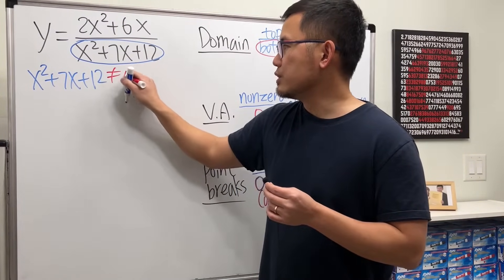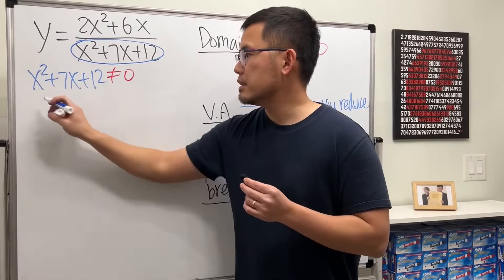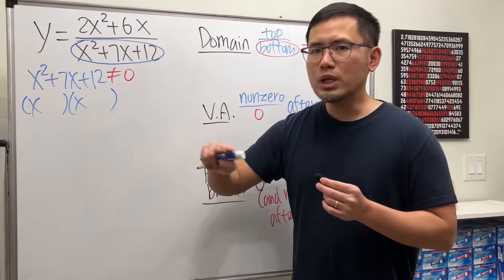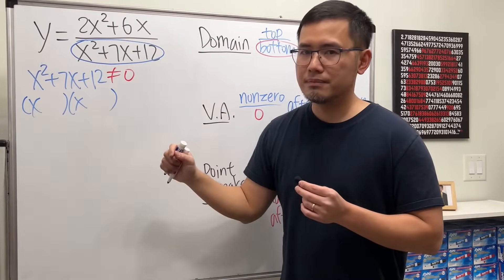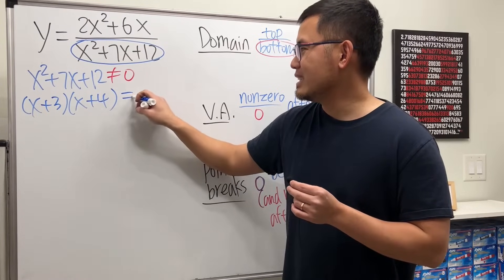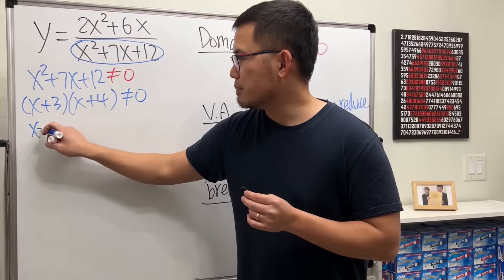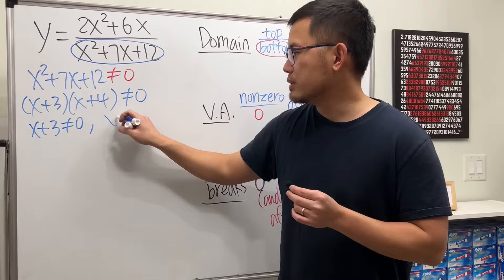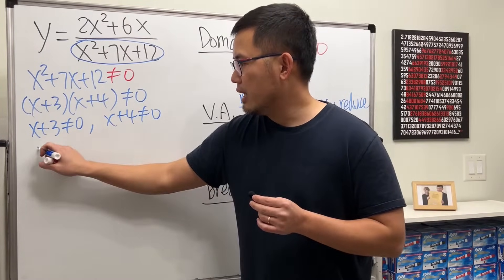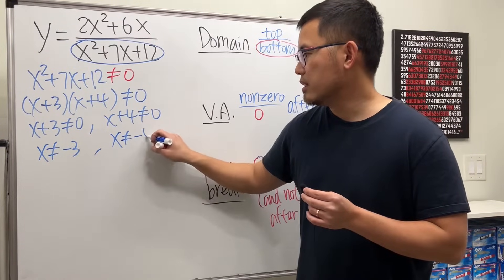x squared plus 7x plus 12. Make it not equal to zero. This is a quadratic trinomial. We can factor it. x times x gives us x squared. What times what gives us 12? Together, we get 7. 3 and 4. So plus 3 plus 4 not equal to zero. And then to solve this, you first put x plus 3 not equal to zero. And then you put x plus 4 not equal to zero. So x cannot be negative 3, x cannot be negative 4.